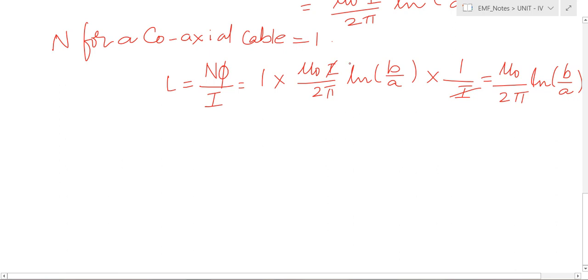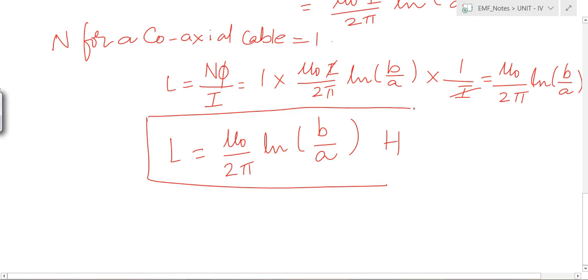The value of self inductance of the coaxial cable is L is equal to mu 0 by 2 pi into ln b by a. This is how you can find out the self inductance of a coaxial cable.